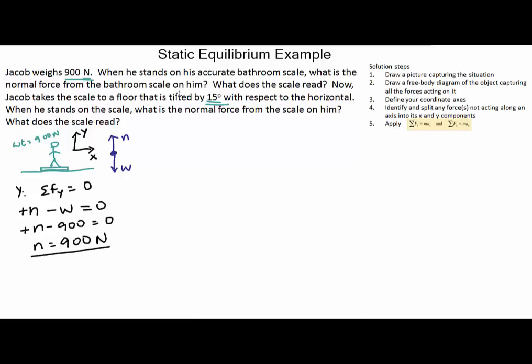Now in terms of what the bathroom scale reads, scales always read the force that's applied on them. We know from Newton's third law that the force that Jacob applies on the scale is equal in magnitude and opposite in direction to the force that the scale applies on Jacob. We know the force that the scale applies on Jacob. That is the normal force that we just figured out. So the force that Jacob applies on the scale, the magnitude of it will again be just 900 newtons. And so that's what the scale would read.